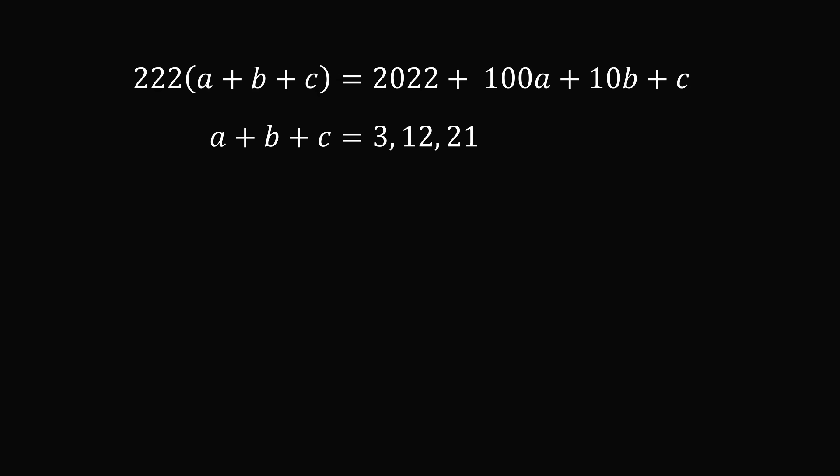So let's consider each possibility. Suppose A plus B plus C was equal to 3. We will substitute this into the left hand side of the equation. So 222 multiplied by 3 will be equal to 666. Is it possible that 666 is equal to the right hand side of the equation, which is 2022 plus 100A plus 10B plus C? No, 666 is smaller than 2022. So it's not possible that the sum of A, B, and C will be equal to 3. We can eliminate this possibility.